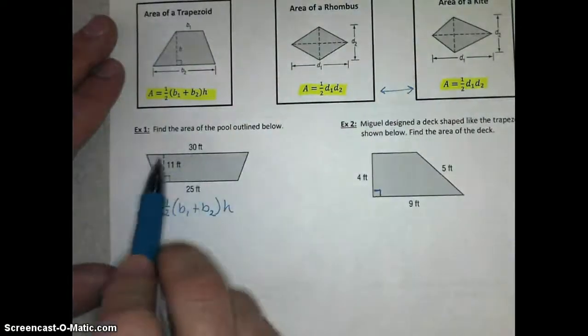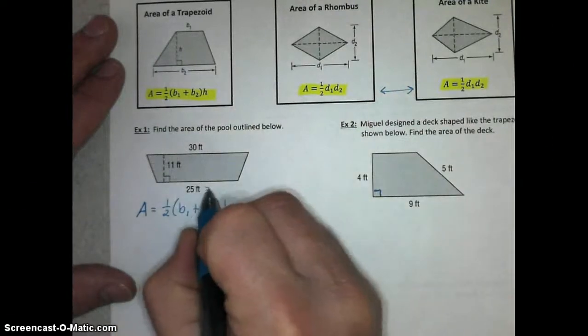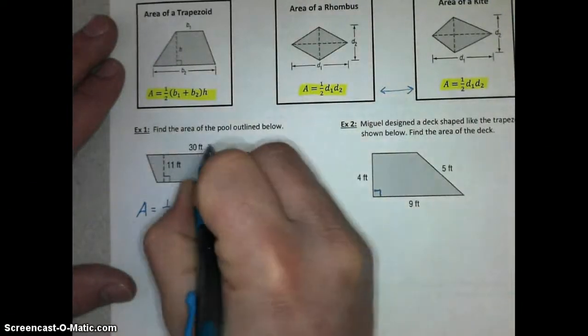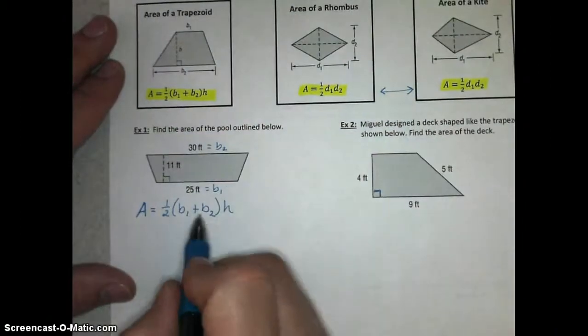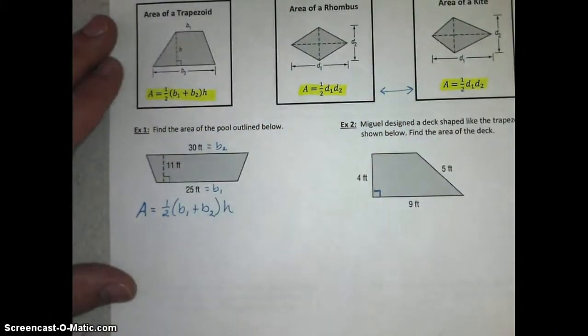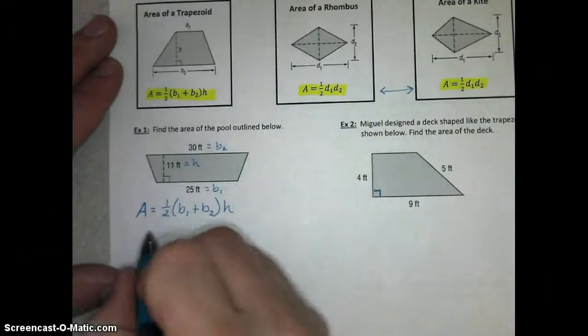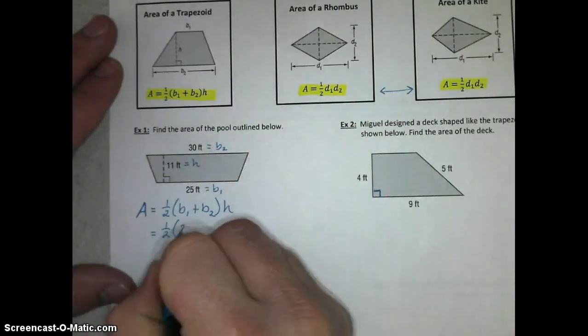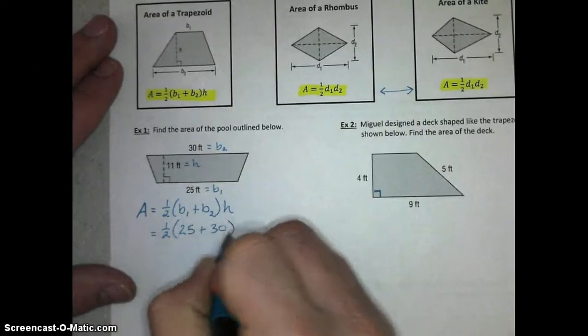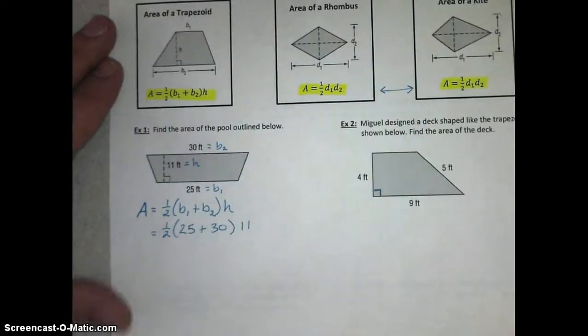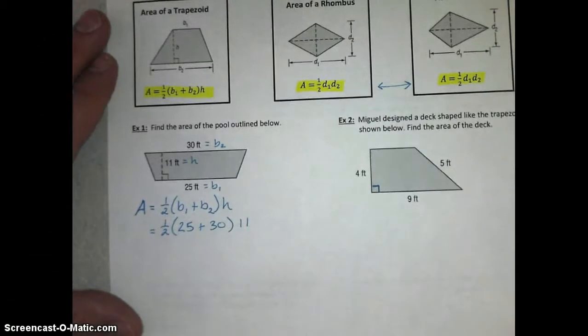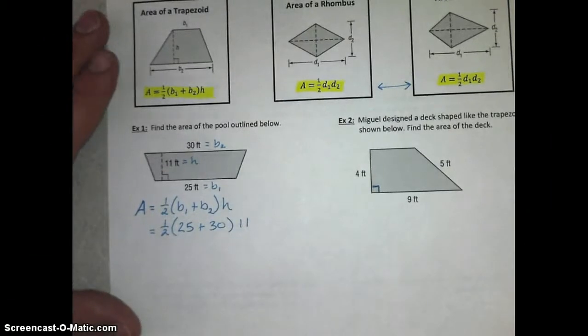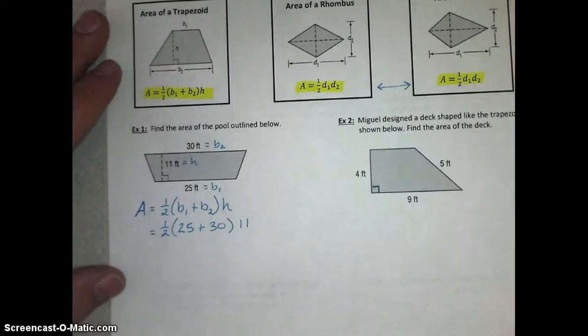These two parallel sides of a trapezoid are called the bases, so base 1 can be your 25 feet, and base 2 can be your 30 feet. It really doesn't matter which one's which. The height is your 11 feet. All we have to do is plug this in and use our standard order of operations by adding these first, then dividing by 2, then multiplying by 11 to get our answer.